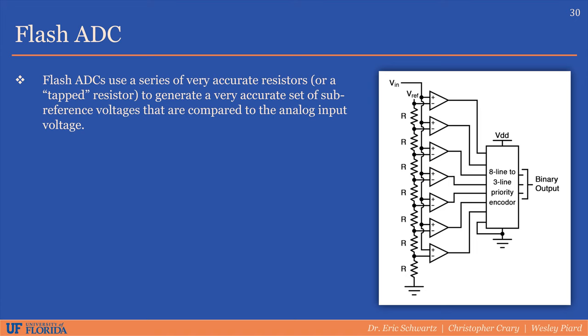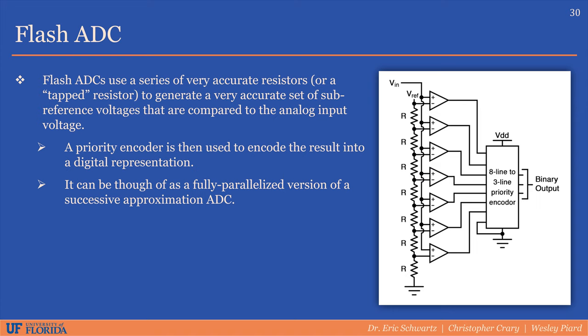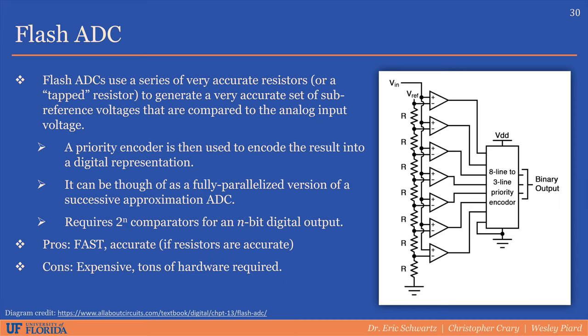Flash ADCs use a very accurate resistor ladder to generate a series of sub-reference voltages compared to the analog input voltage simultaneously using comparators in parallel. A priority encoder encodes all comparator outputs into a binary representation. It can be thought of as a fully parallelized version of the SAR ADC — extremely fast because all bits are calculated in the same operation. However, it requires 2 to the n comparators for an n-bit implementation, making it extremely hardware-intensive and therefore very costly.